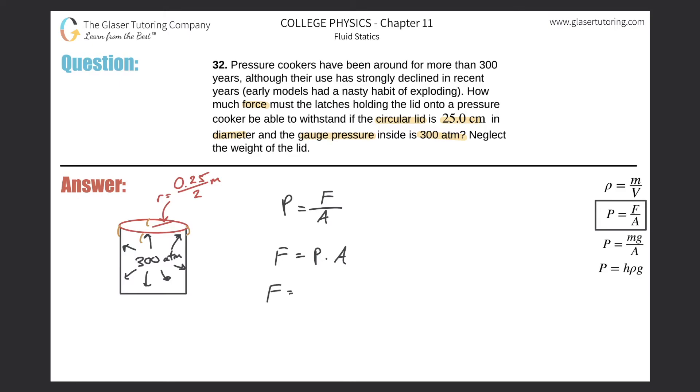All right. So force will equal the total pressure, but remember in this equation, pressure needs to be in Pascal. So we have to take our 300 atmospheres and convert it into Pascals, right? I'll do that actually within the formula itself. So remember that for every one atmosphere, there's 1.013 times 10 to the fifth Pascal. So this takes care of the pressure and then times the area, it's circular, right? So we're dealing with pi r squared.